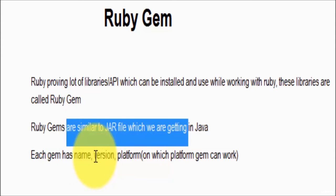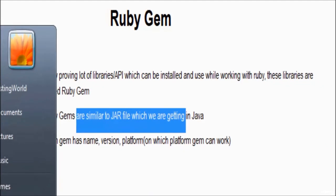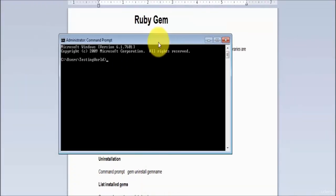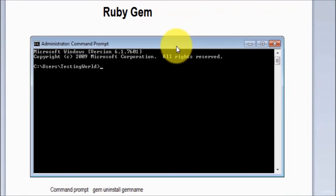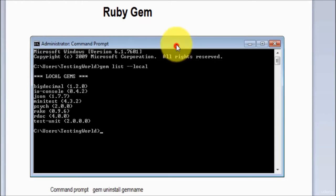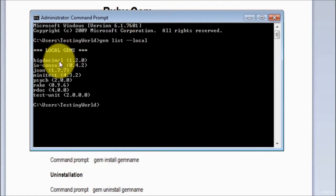I'm going to show the process of how to install and download gems. First start the command prompt. To check how many gems are currently installed on your system, use the command 'gem list --local'. This fetches all the libraries and gems installed on your system. Here you can see we have a few gems installed and we can also see their versions.